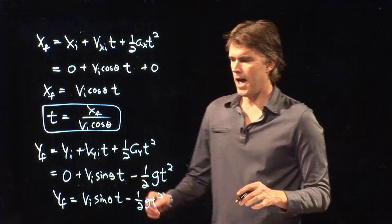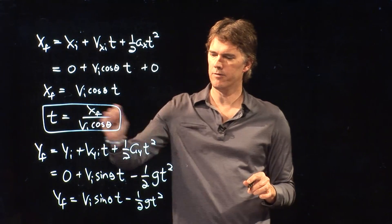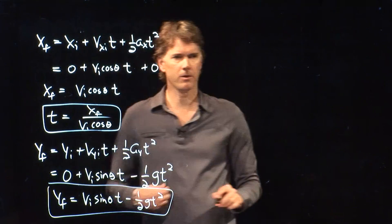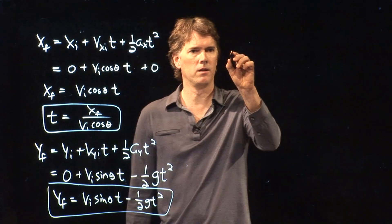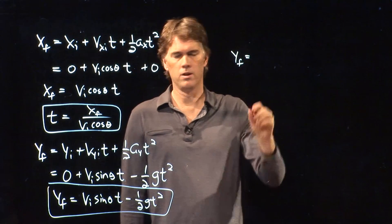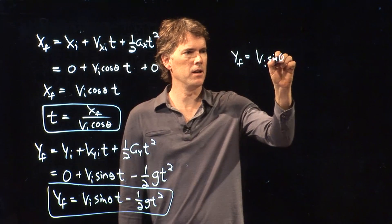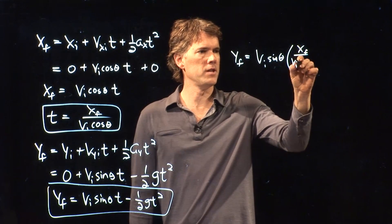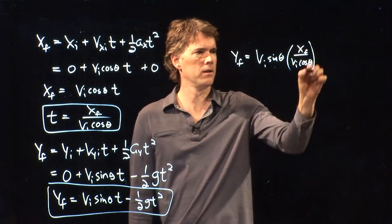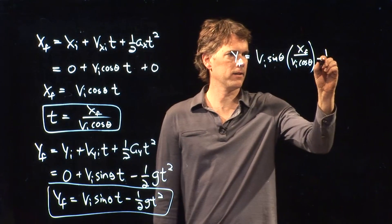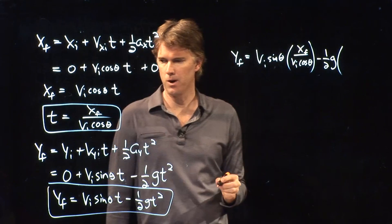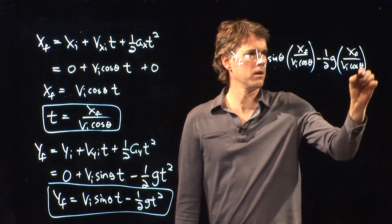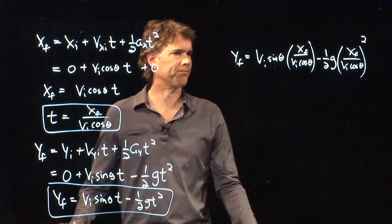Let's take that and let's plug in t from earlier so we can remove time from the equation. yf equals vi sine theta times t, which we said was xf over vi cosine theta. And then we're going to subtract 1/2 g t squared, which is xf over vi cosine theta quantity squared.